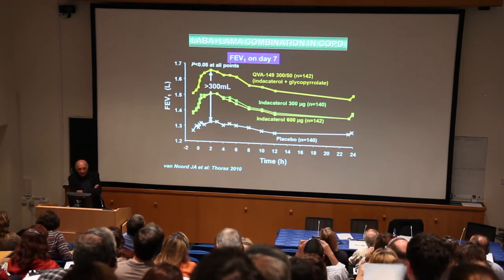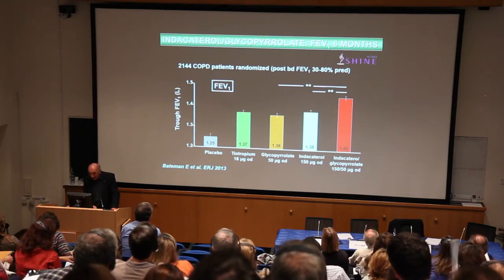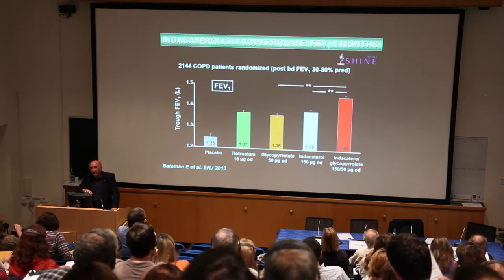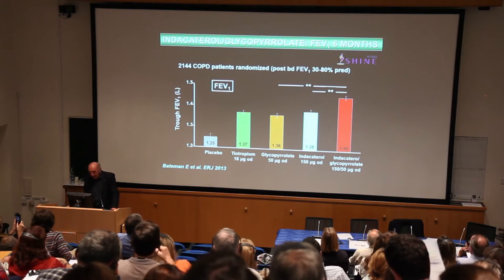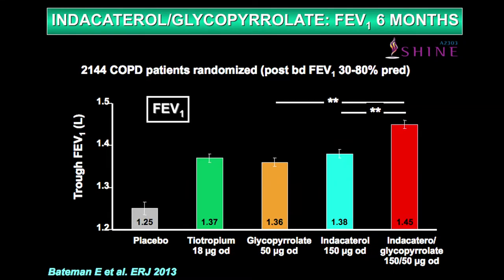The peak response is 300 milliliters — one of the biggest bronchodilator responses you would ever see in true COPD patients. In longer-term studies, glycopyrrolate and indacaterol alone have equal effects because they're both once-a-day drugs, confirming tiotropium has the same effect as glycopyrrolate. But if you add them together, you see a significant increase in FEV1 greater than either indacaterol or glycopyrrolate alone, representing important additional bronchodilation in clinical practice.